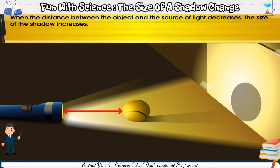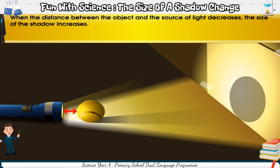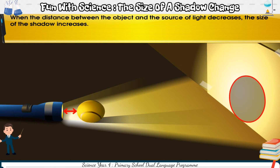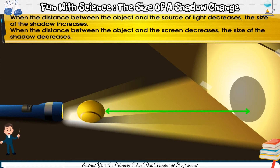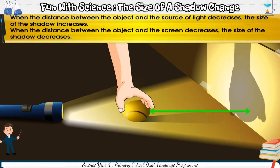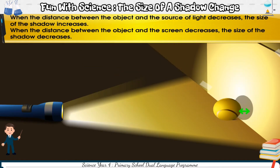When the distance between the object and the source of light decreases, the size of the shadow increases. When the distance between the object and the screen decreases, the size of the shadow decreases.